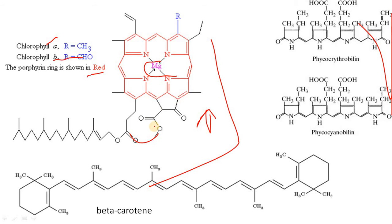Chlorophyll synthesis occurs as a result of a series of biochemical changes within the cell. Factors which affect chlorophyll synthesis are: genetic factors, light, oxygen, magnesium, iron, copper, manganese, carbohydrates, nitrogen compounds, and temperature. Chlorophyll a and b are present in higher plants and algae. Chlorophyll c is present in diatoms and brown algae. Chlorophyll d is present in red algae. Chlorophyll e is present in Tribonema and zoospores of Vaucheria. Bacteriochlorophyll a is present in purple and green bacteria, and bacteriochlorophyll b is present in strains of purple bacterium Rhodopseudomonas.